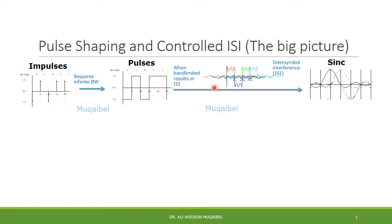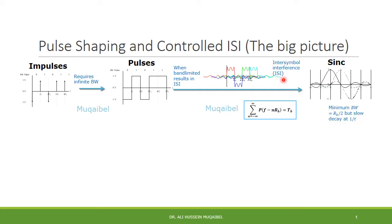Next, we go from pulses to the use of SINC. The beauty of using SINC is that it satisfies the Nyquist criteria for zero ISI, so there will be no inter-symbol interference. Another advantage of using SINC to represent the data is the minimum required bandwidth, which is half the data rate. But there is still one problem with SINC: it has a relatively high tail, decaying at a rate of 1 over T.